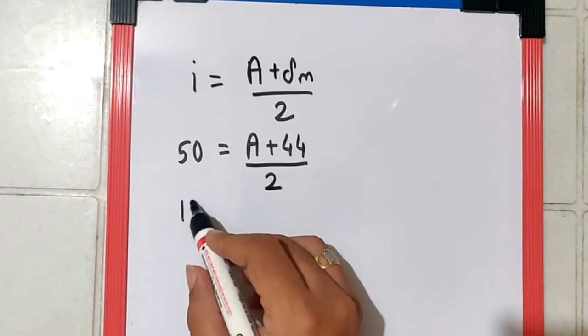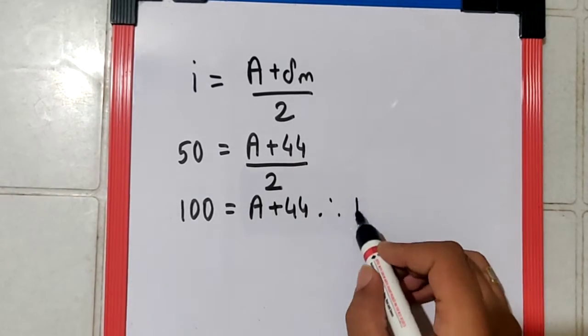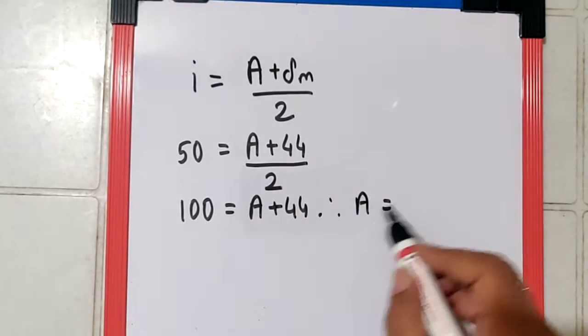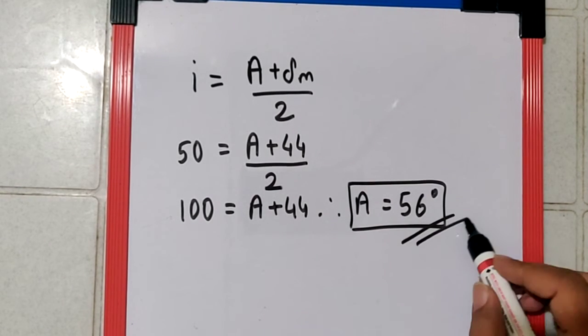This goes over here and becomes 100 equals A plus 44. And so A is going to be 100 minus 44, which is 56 degrees. And that is your final answer.